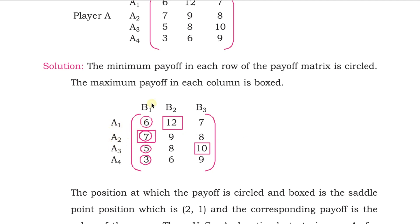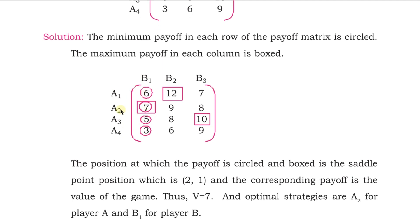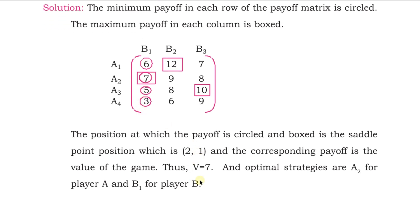The strategies applied by player A and player B are A2 and B1 respectively. The position in the matrix is second row, first column — that is (2, 1) — and the payoff there is 7. Thus the value of the game is 7. The optimal strategies are A2 for player A and B1 for player B, and position (2, 1) is the saddle point. This is how you solve a game theory problem using the maximin-minimax principle.